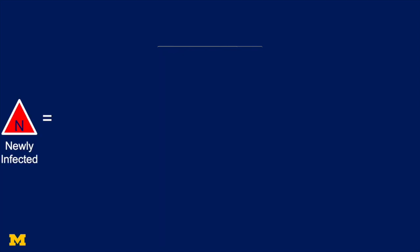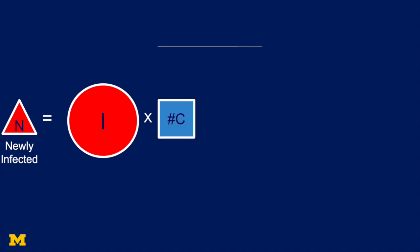We're going to use those categories to come up with a formula for the number of newly infected people. Well, the number of newly infected people are going to depend on the number of infected people. And it's going to depend on how many contacts each of those infected persons has. So how many people does someone who's infected bump into in a given day?